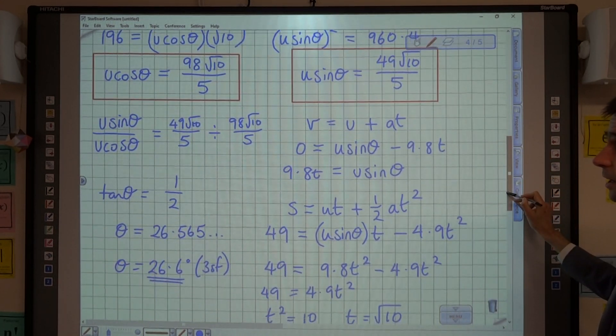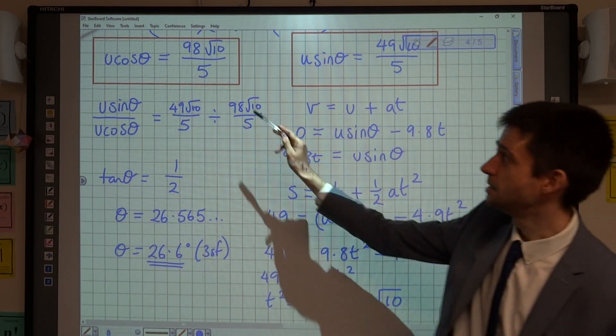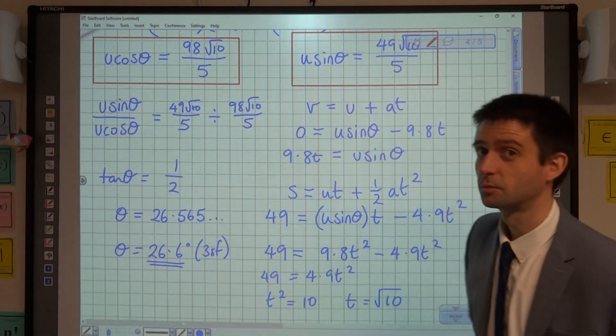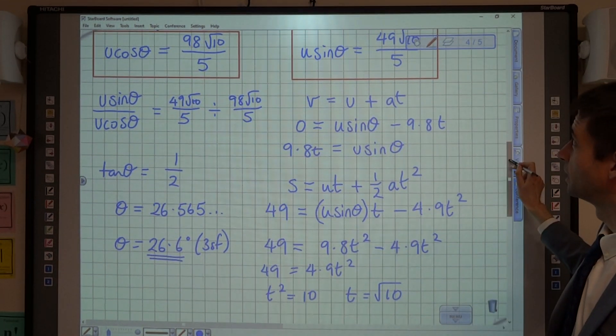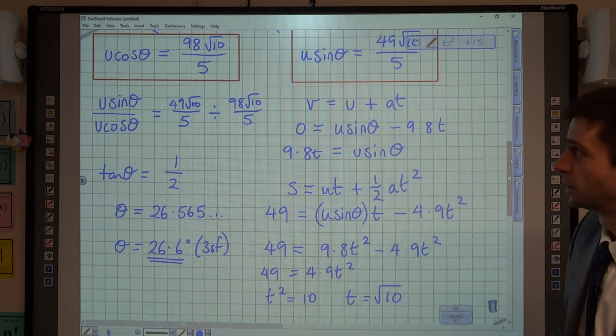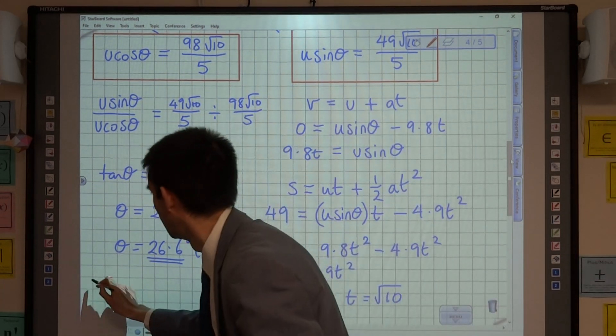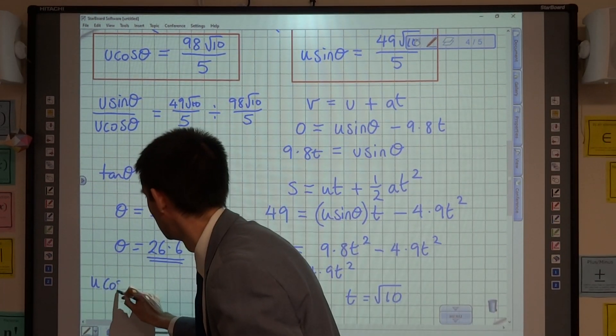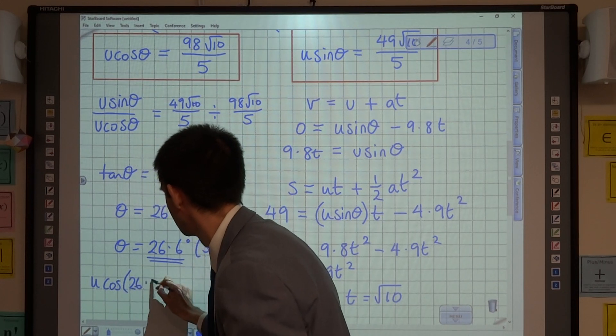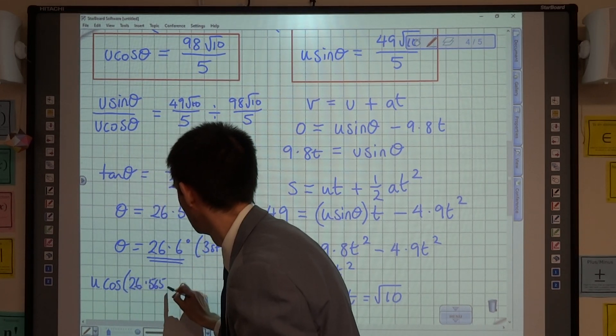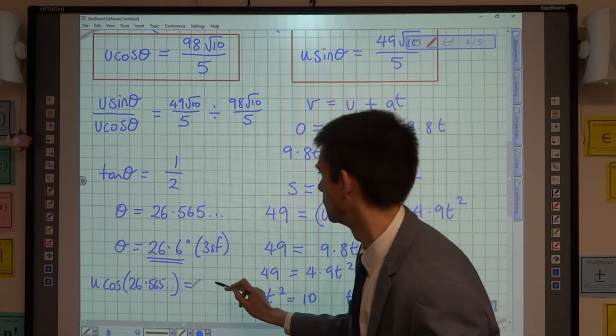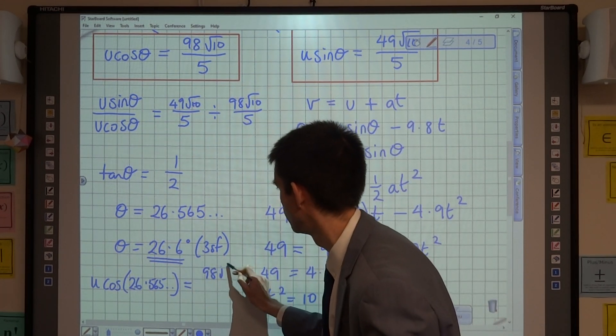But what I can do now is I can substitute into either of my expressions here to work out the value of u. So if I use the one on the left, u cos theta, so say u cos of 26.565, etc., is equal to 98 root 10 over 5.